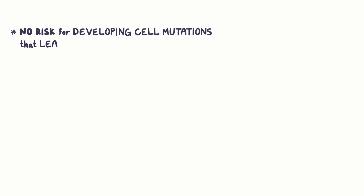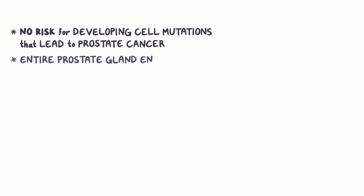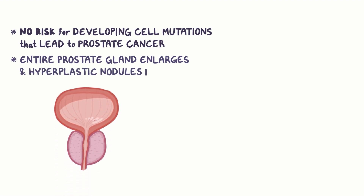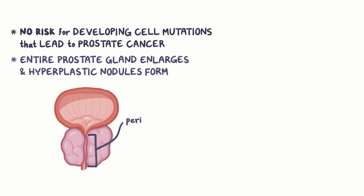Fortunately, in BPH there's no increased risk for developing cell mutations that lead to prostate cancer. Rather, the entire prostate gland enlarges pretty uniformly, and small hyperplastic nodules can form within it. These nodules are smooth, elastic, and firm, and are sometimes mistaken for prostate cancer. Typically, hyperplastic nodules will form in the inner portions of the gland, specifically around the prostatic urethra, called the periurethral zone.